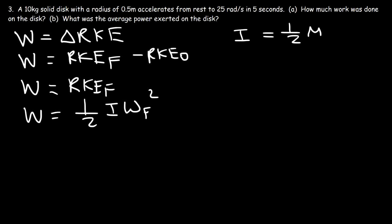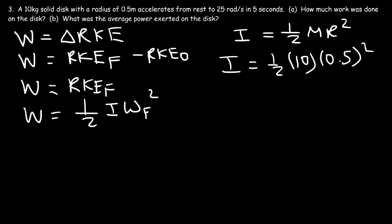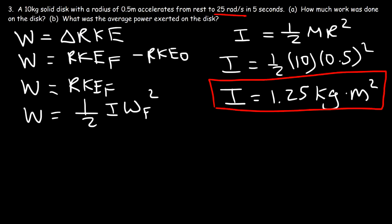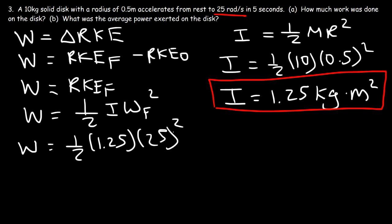We need to calculate the moment of inertia of the solid disk: I = (1/2)mr². The mass is 10 kilograms and the radius is 0.5 meters. Half of 10 is 5, and 5 times 0.5 squared gives 1.25, so the inertia is 1.25 kg·m². Now we can calculate the work: (1/2) × 1.25 × 25² = 390.625 joules.